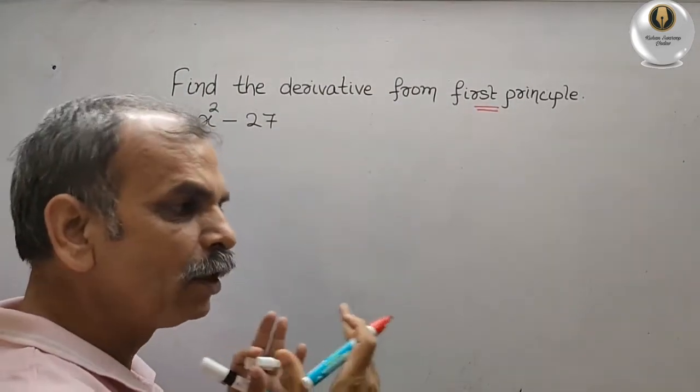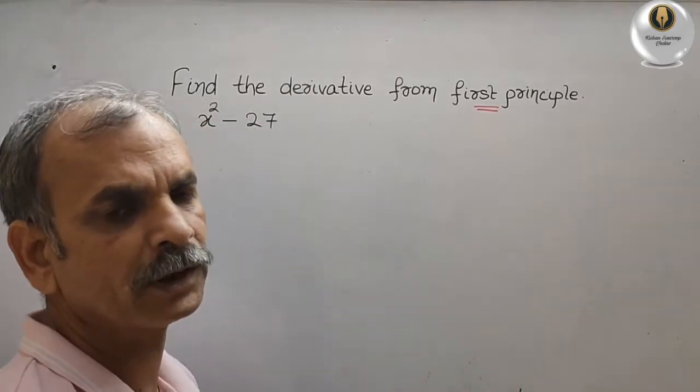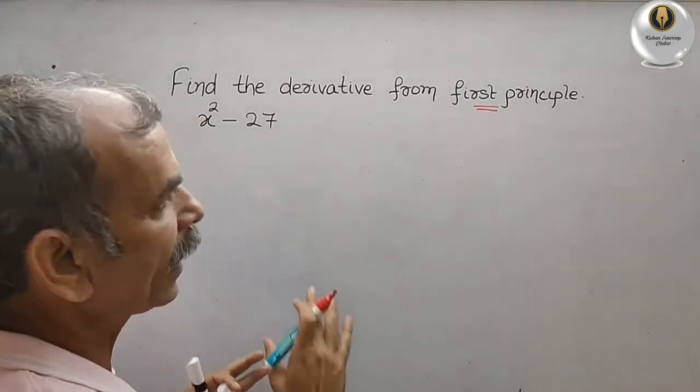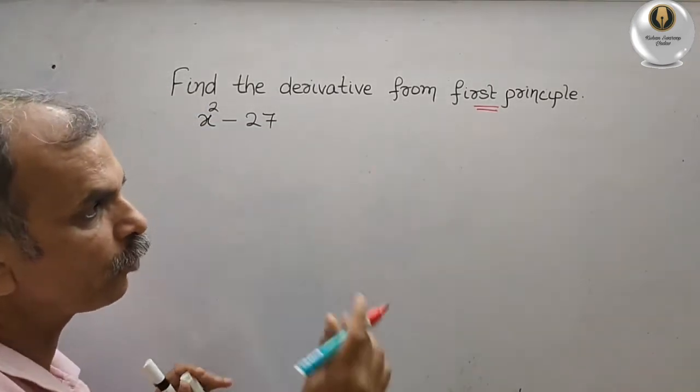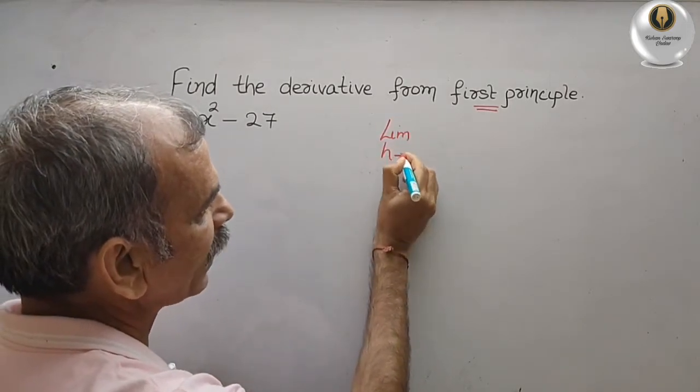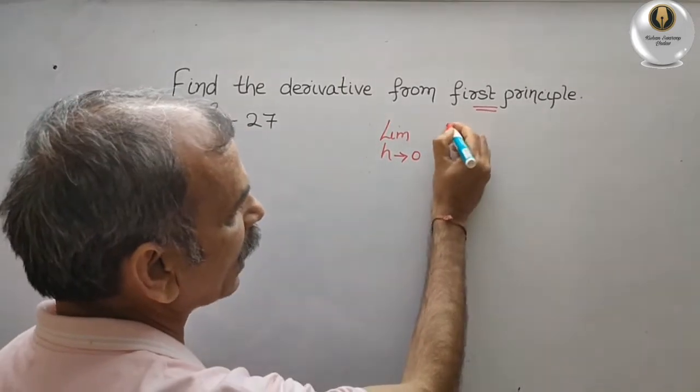It means that you have to do the derivative the normal way. First principle, normal way, that means first we will write the formula for that. The formula is limit h tends to 0.